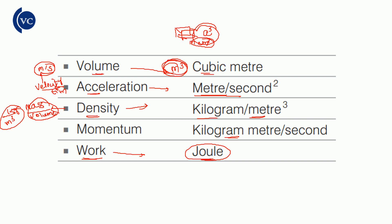Momentum — symbol p. The unit of momentum is kg·m per second. The formula is mass multiplied by velocity. Mass is in kg and velocity is in m per second, so the full unit of momentum is kg·m per second.